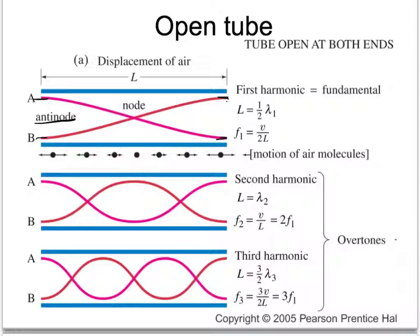Remember that a wavelength is the distance between two repeating parts. If you look at the pink one, we do not have a repeating part — this is not a full wavelength. We would have to carry out another one of these to get back to a crest. This is from crest to trough, so it's only one half wavelength. The red one shows the same thing: from trough to crest is only one half wavelength. So in a tube open at both ends, your first harmonic — your fundamental — is a wavelength of twice the length of the tube.